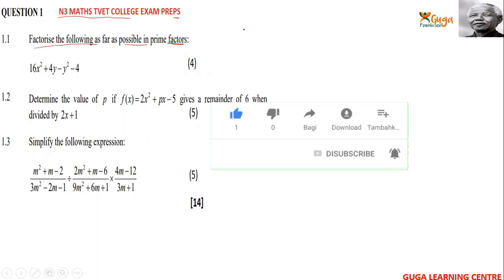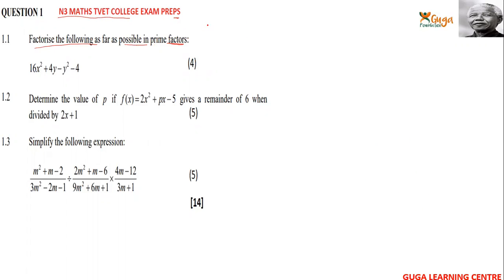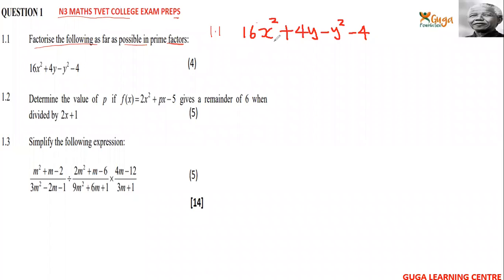So 1.1 — let me write it here. The expression is 16x² plus 4y minus y² minus 4. We have y squared here, so we can try to rewrite and rearrange it.